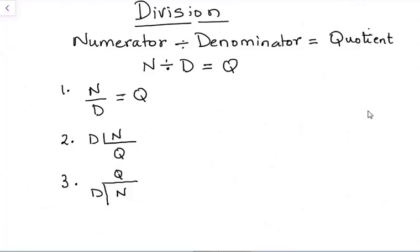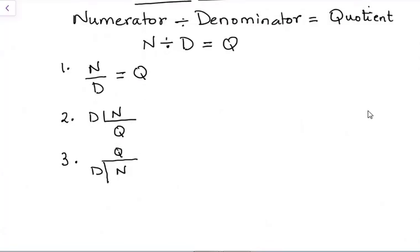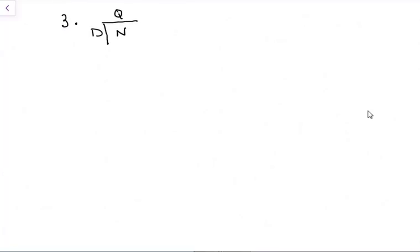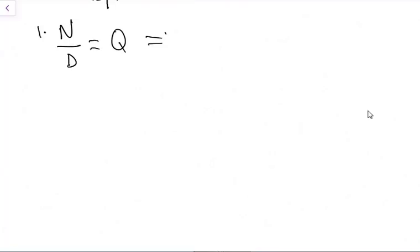Let's start with the first example where we have numerator over denominator equals the quotient — the format N over D. Our first example will be 20 divided by 2. So in this instance, our numerator will be 20, our denominator will be 2, and if we write it in that format it will be 20 over 2.